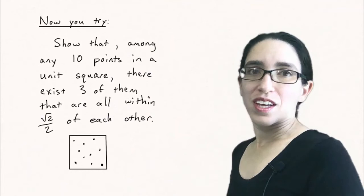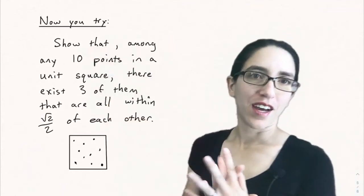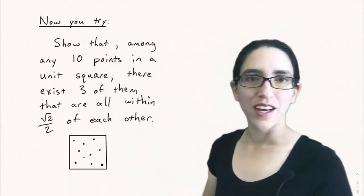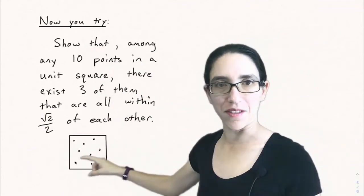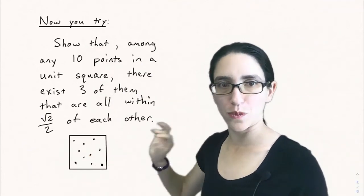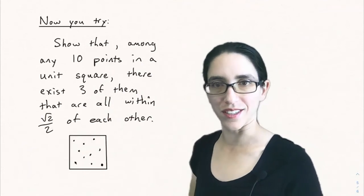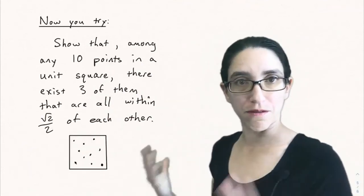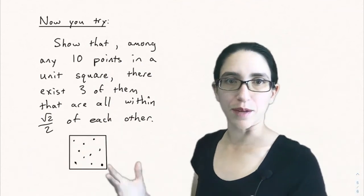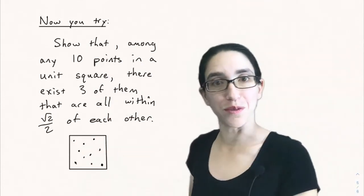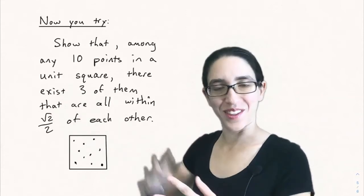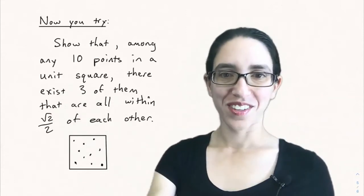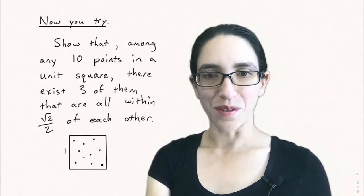Now it's your turn. Show that among any ten points placed in a unit square, there must exist some three of them that are all within square root of two over two distance from each other. This is similar to the five-points problem we did, but now we'll use version two of the principle to find three points within some region. That's all for today — we'll see you next time.